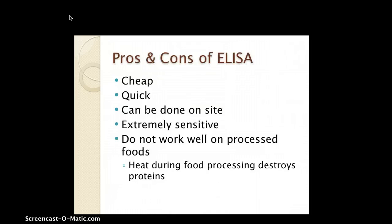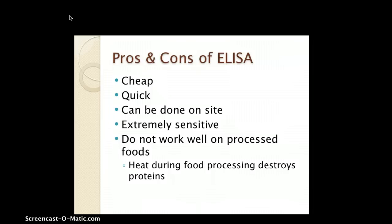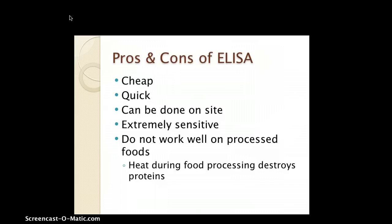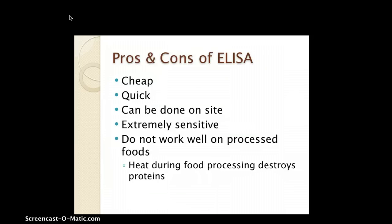Pros and cons of ELISA: it's cheap, it's quick — it can be done in five minutes to about one hour — it can be done on site, and it's extremely sensitive. This was one of the questions given by Dr. Weber. ELISA is extremely sensitive due to its specific antibodies and antigens — if a GMO is present, it will react right away; if not, it won't. A downside is that ELISA does not work as well on processed foods, because heating during food processing destroys the protein.